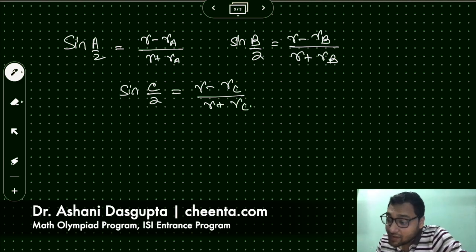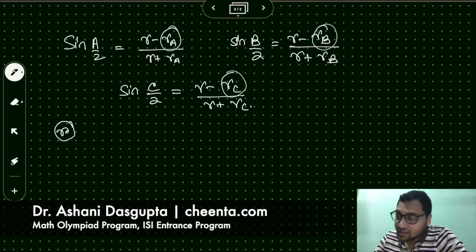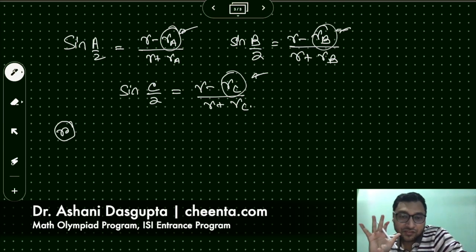So what do we have here? We have sin of A by 2 is R minus RA by R plus RA. Sin of B by 2 would be similarly R minus RB by R plus RB. And sin of C by 2 would be R minus RC by R plus RC. So what is our goal? Our goal is to find out the value of R using RA's value, RB's value, and RC's value. These three things we know. We want to find out R.